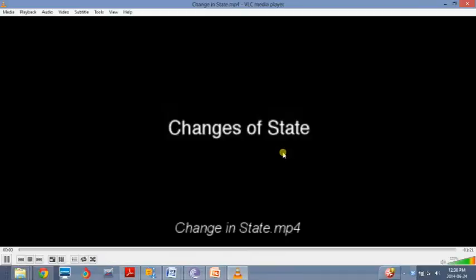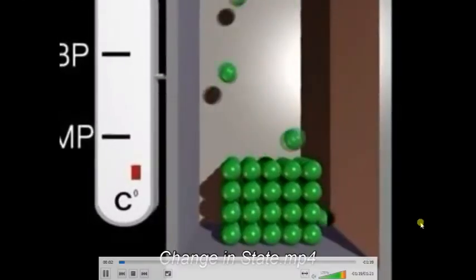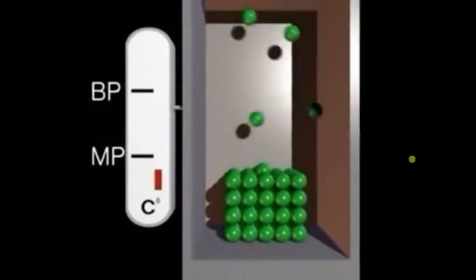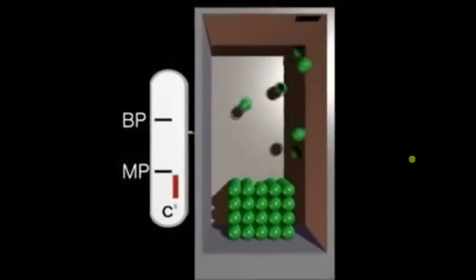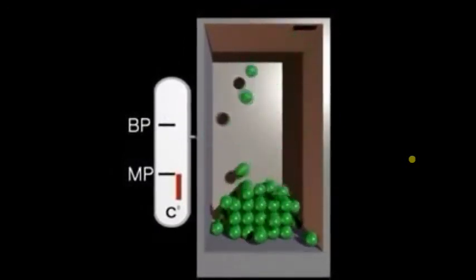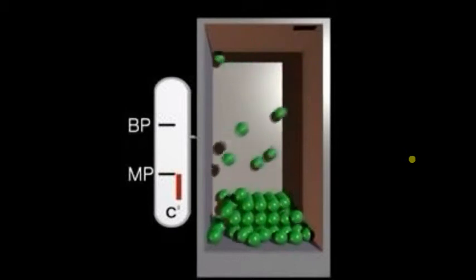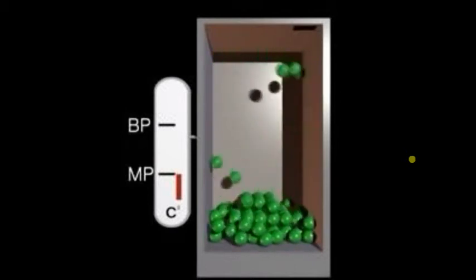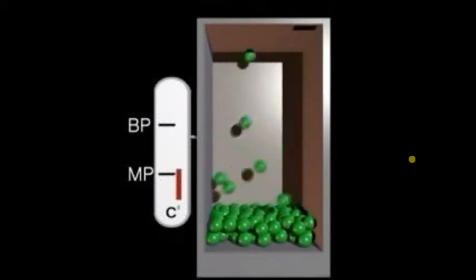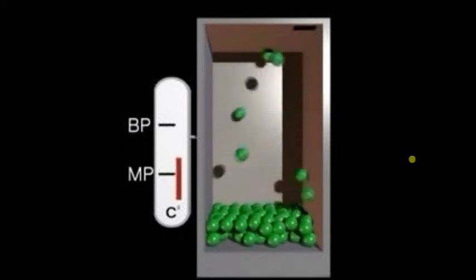So let's look at this little animation here. Here we can see we've got some particles that are obviously in a solid state and the temperature is increasing from 0 degrees Celsius up. Now as the temperature approaches MP, which stands for the melting point, the particles gain a lot more energy and you will notice that they suddenly have moved from this fixed structure into what looks like a liquid.